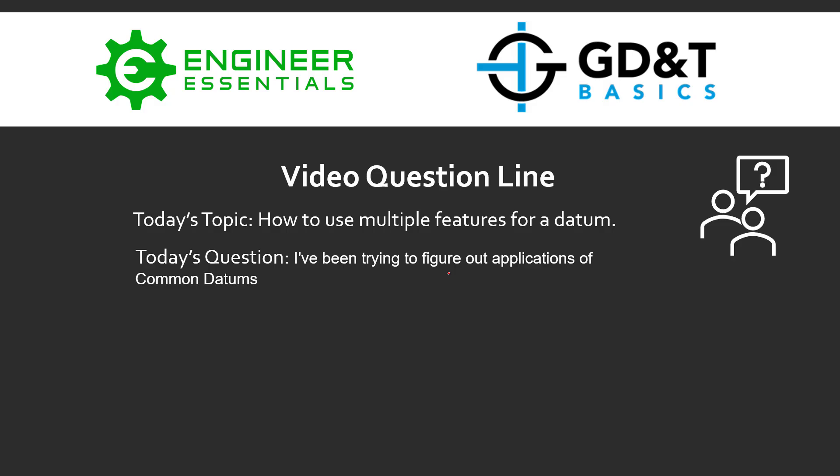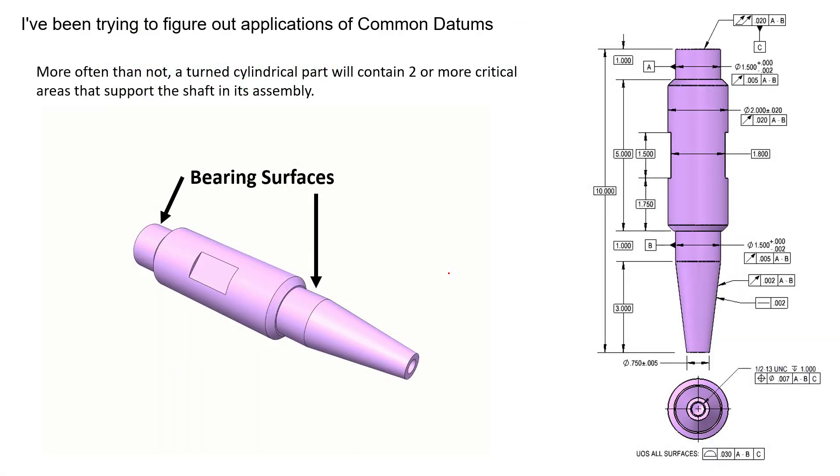We'll talk about why we're using it in this situation and how it's being applied and interpreted. The first most common feature I see this tool being used on is with cylindrical features or shafts, like we see here, things that are turned around a common axis. A lot of times these axes or these shafts operate on more than one critical feature.